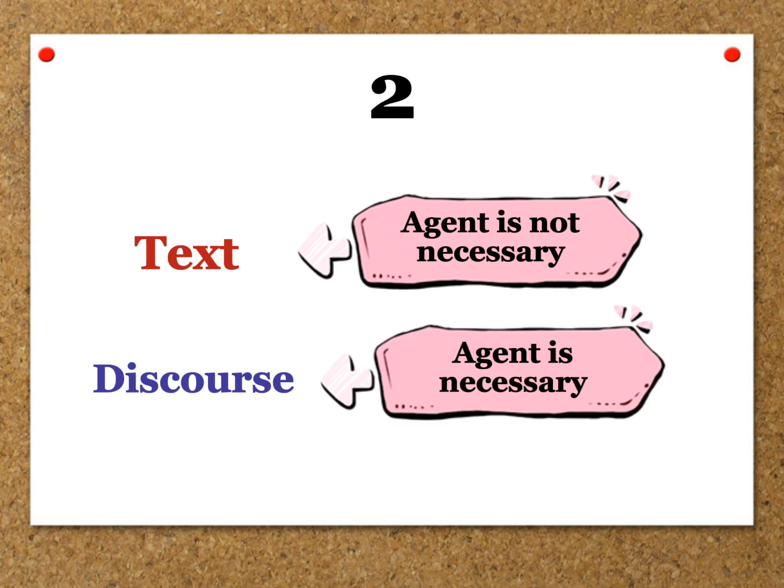The second difference: in a text, there is only the author who has written it, and the reader reads it. The agent — the audience — is not even present in the text. But in discourse, the agents or participants must be present.